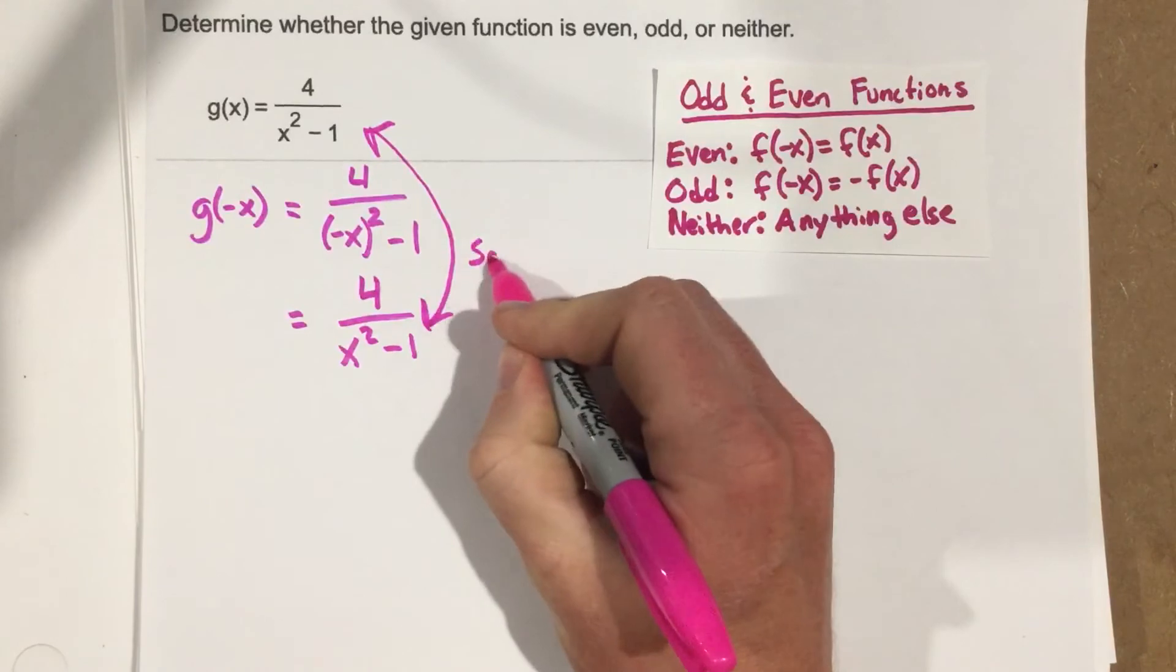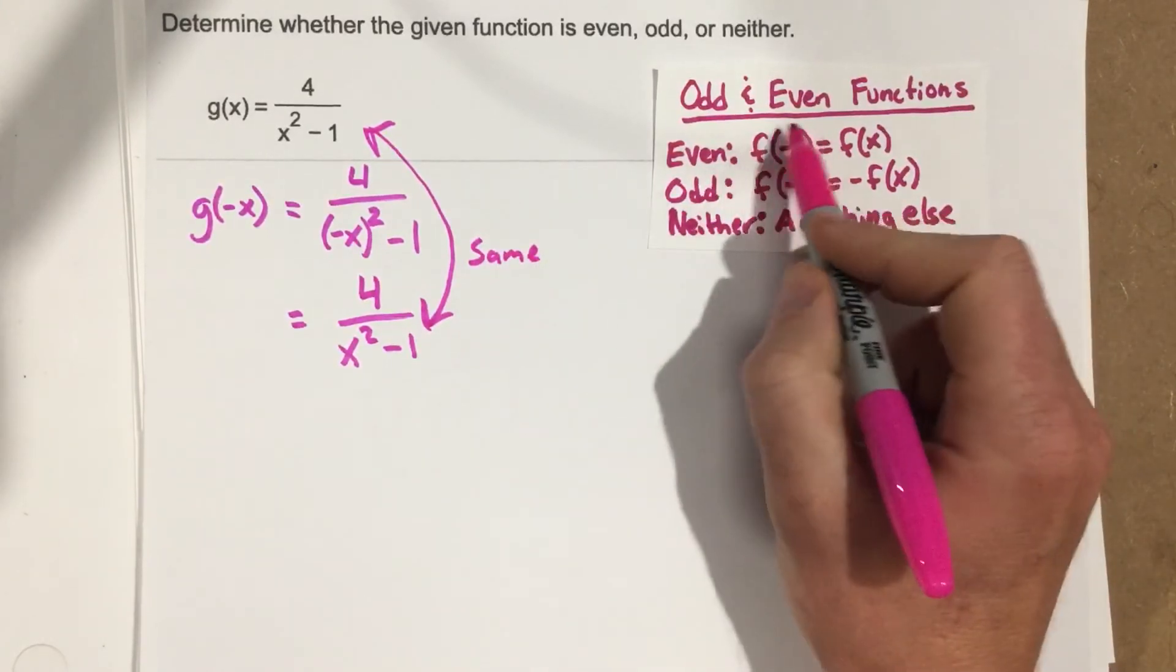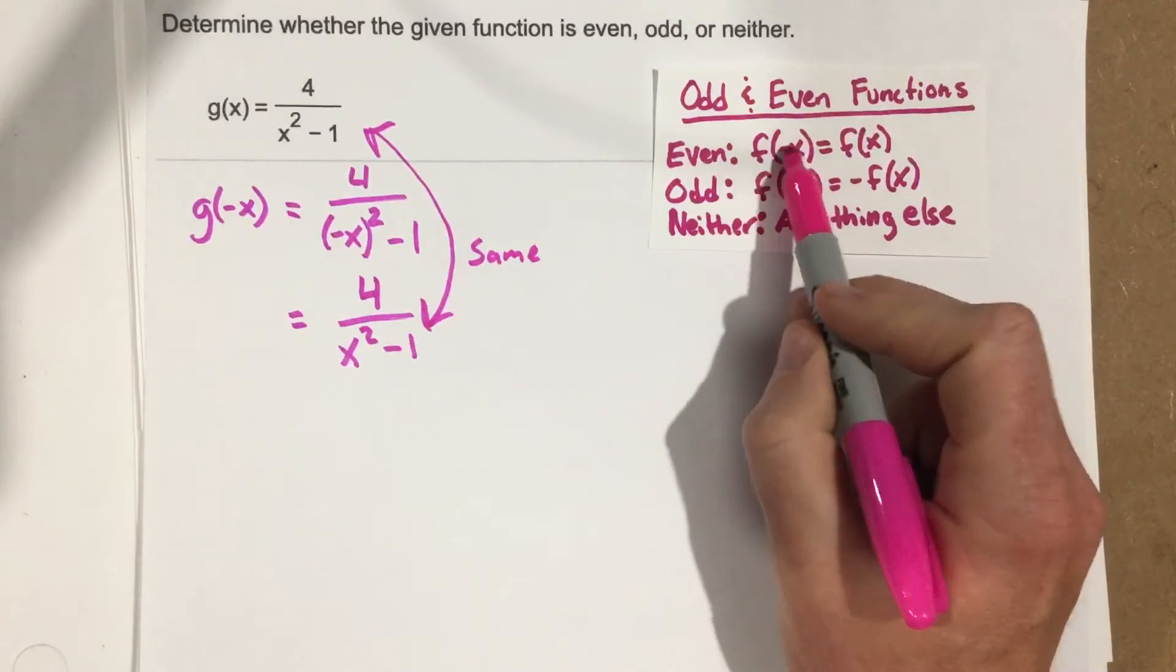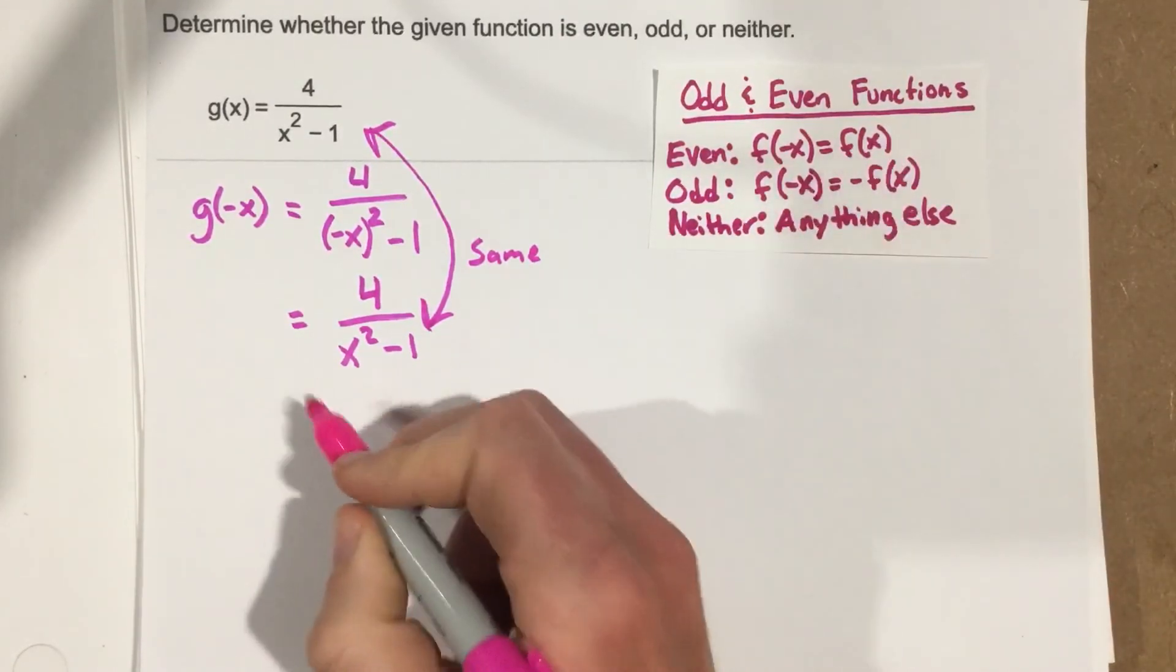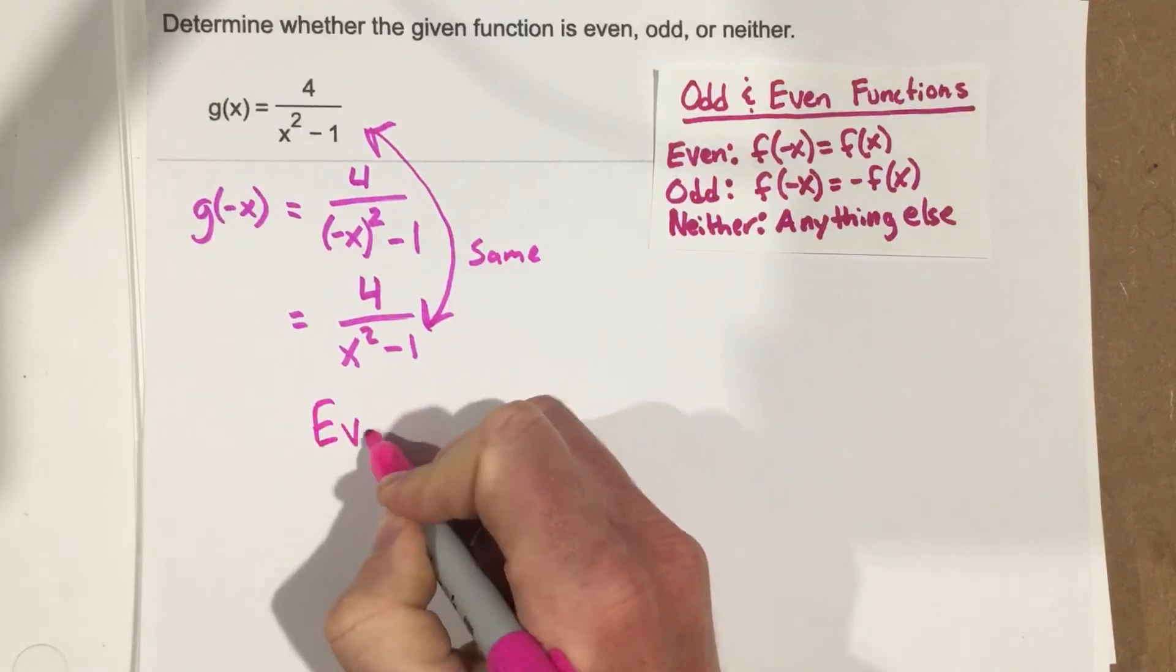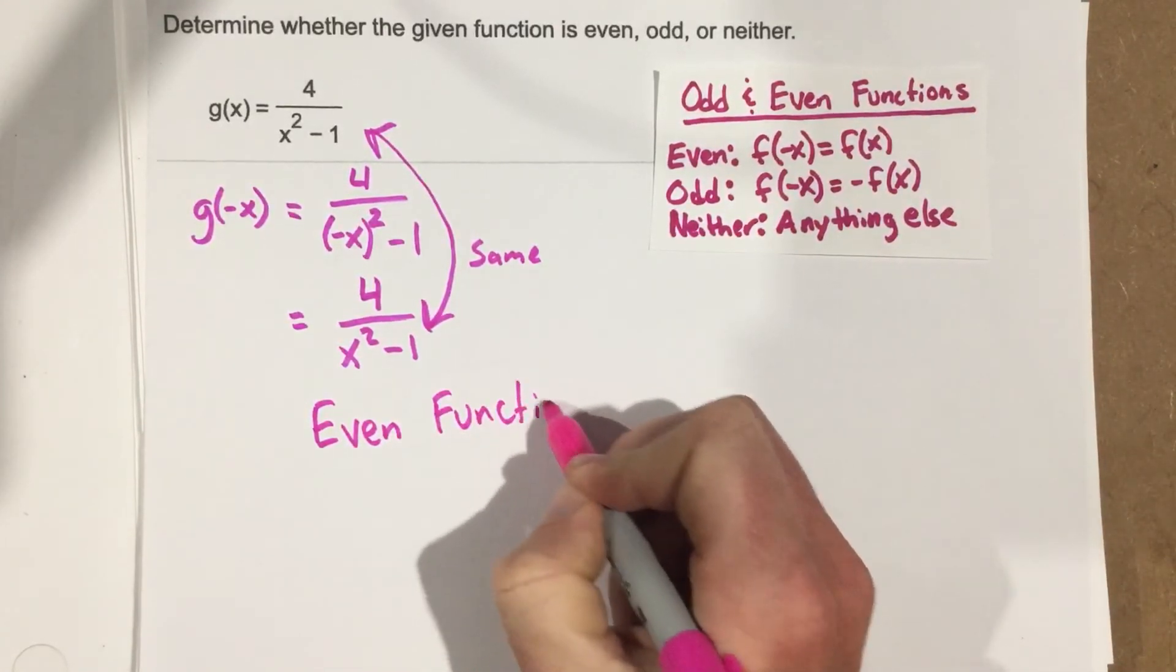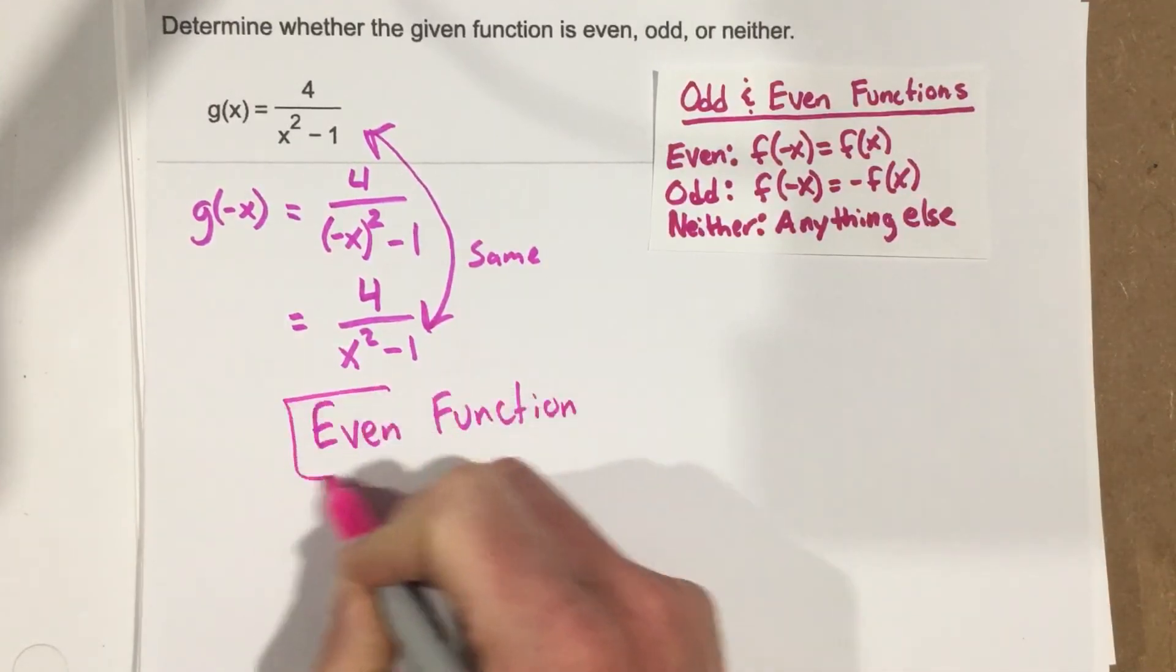So they're the same. Because they're the same, that falls in the even category. We plugged in a negative x, and we ended back with the original function. So this is an even function.